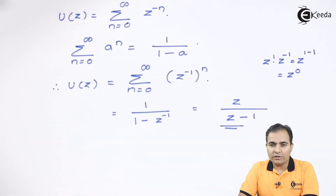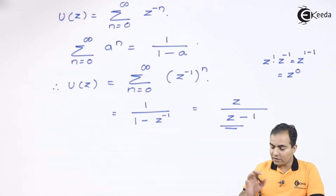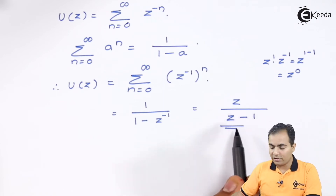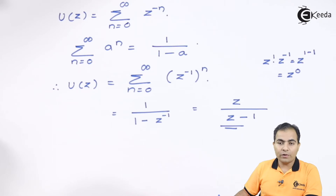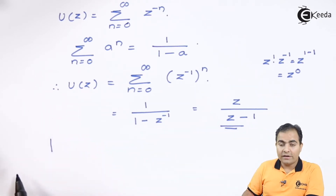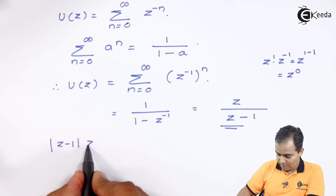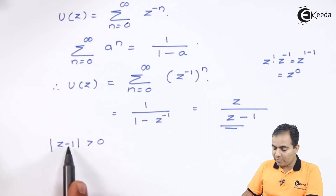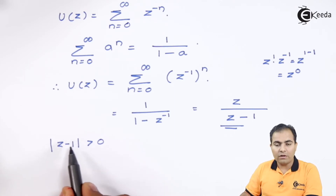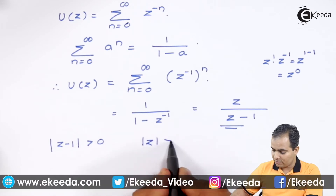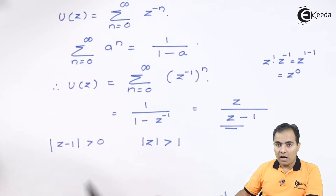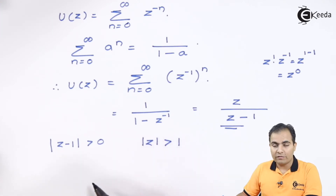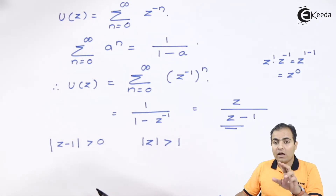Now the much more important part is the ROC. ROC means we have to find the region in which u(n) can be transformed to give a finite result. According to the ROC definition, the denominator factor must be greater than 0, so |z − 1| > 0. Shifting the −1 to the right-hand side gives |z| > 1. This means the ROC of u(n) is available when |z| > 1.